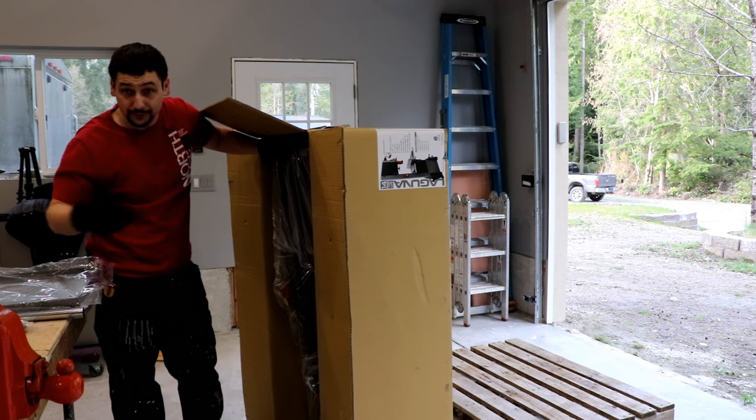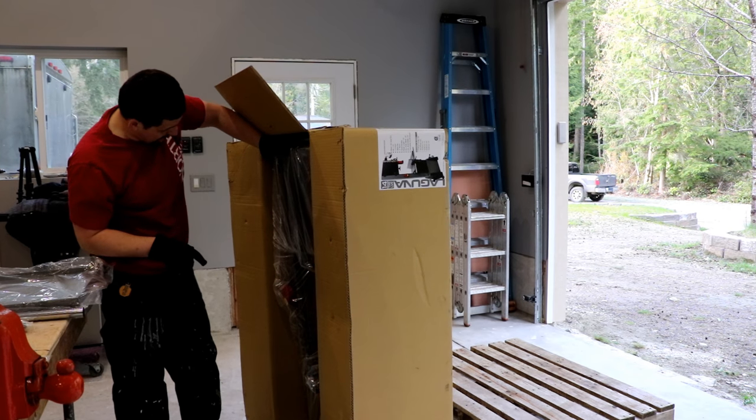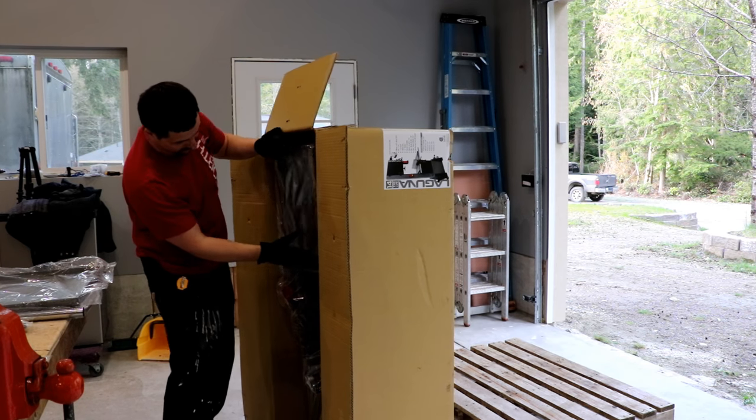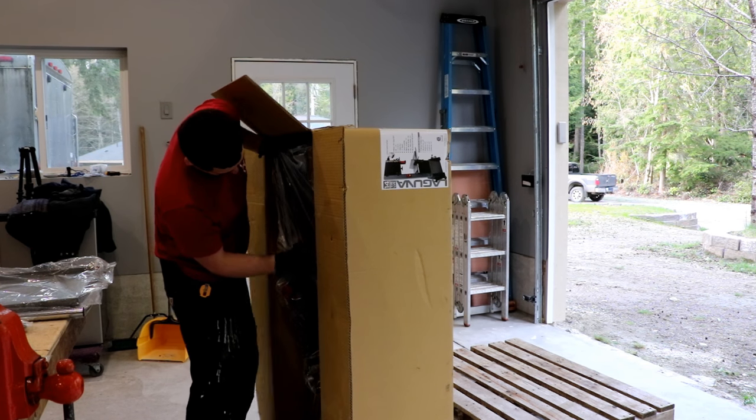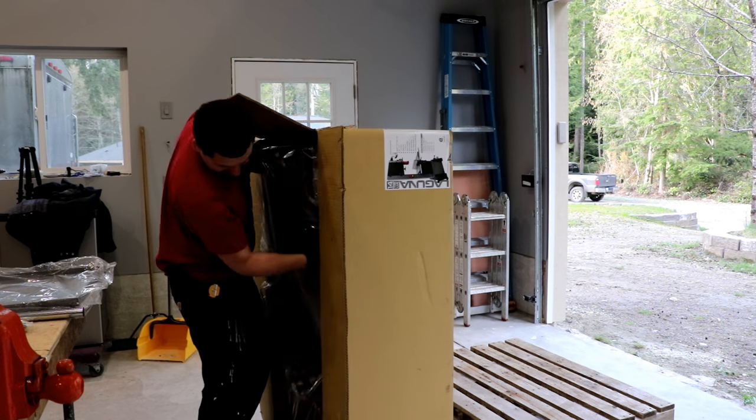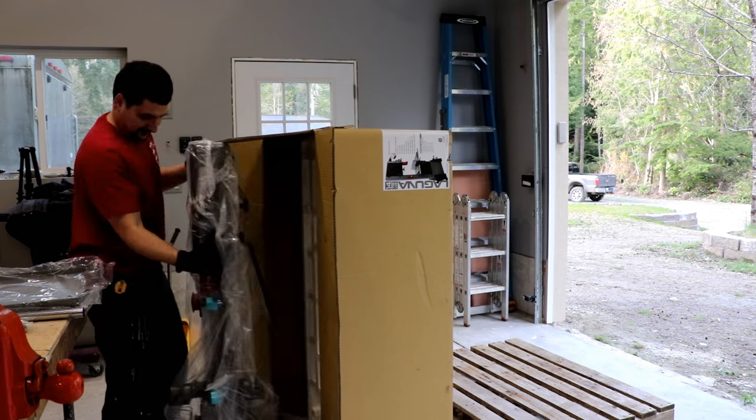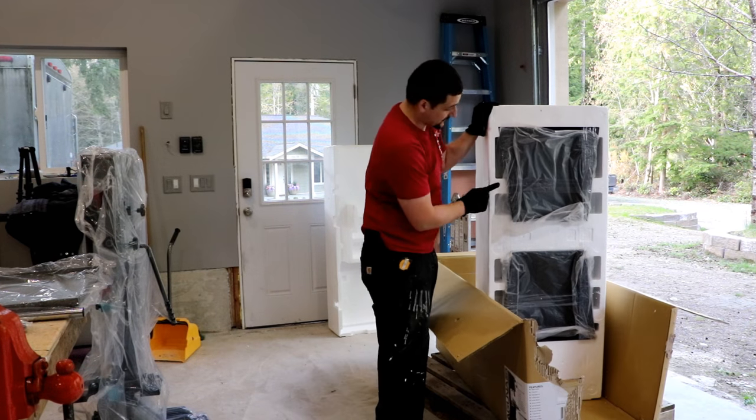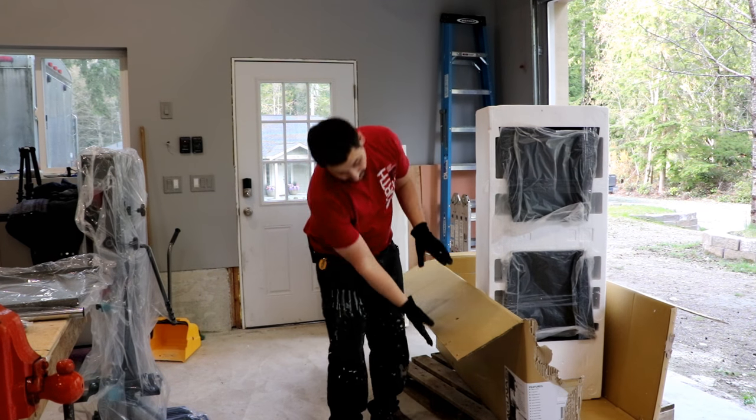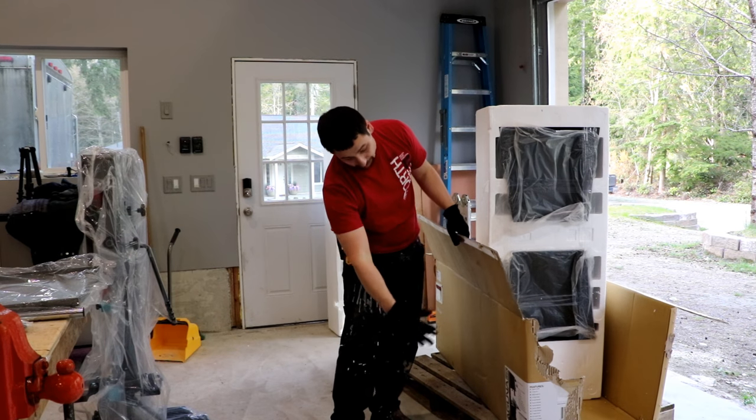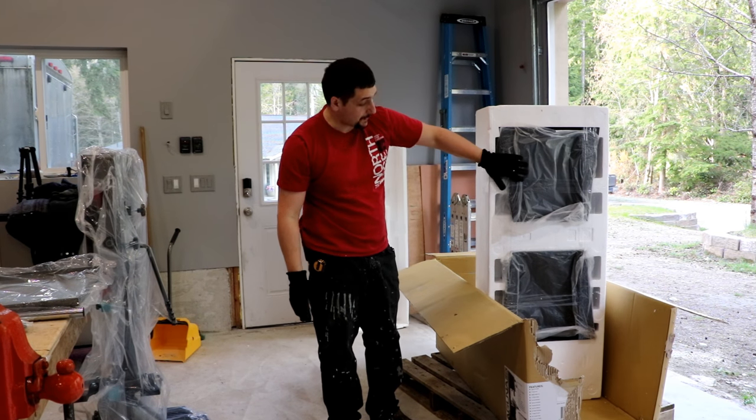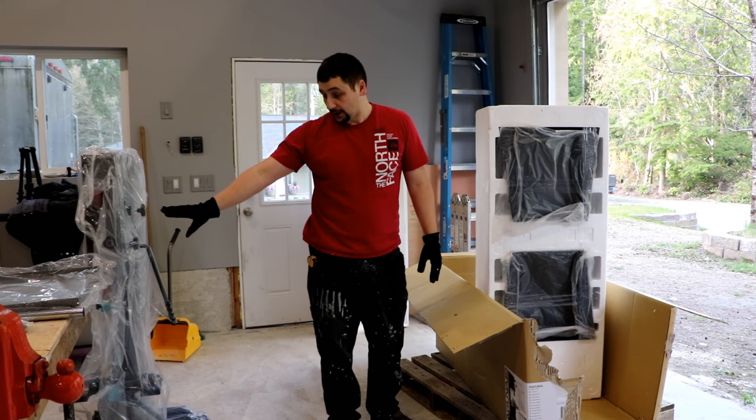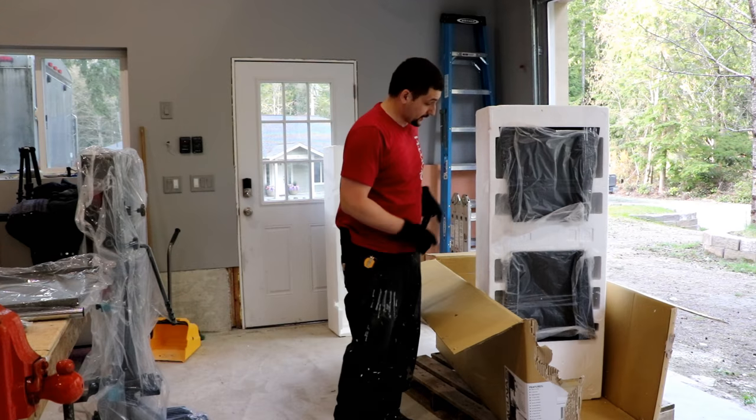So I highly recommend you get two people to do this. But you basically want to stand it up just like I have. They package it in such a way that you're able to walk it out of the box. You need to open the box with the picture so that it's upright. Open the top of the box first. They tape in these two side plates so that when you walk the saw out, they stay in place.